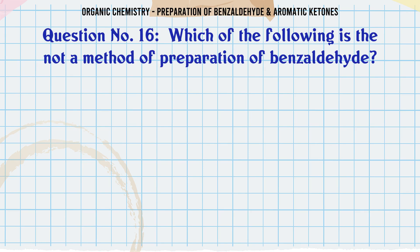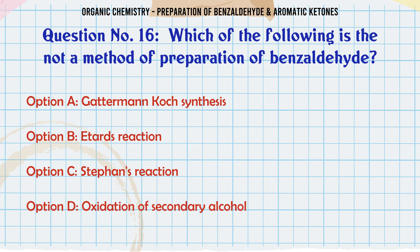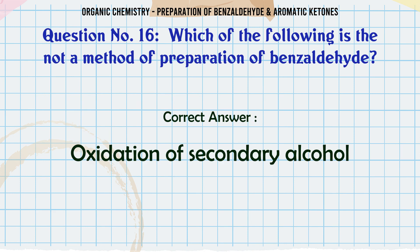Which of the following is not a method of preparation of benzaldehyde? A. Gattermann-Koch synthesis. B. Etard reaction. C. Stephan's reaction. D. Oxidation of secondary alcohol. The correct answer is oxidation of secondary alcohol.